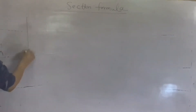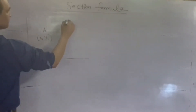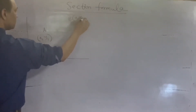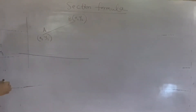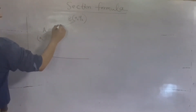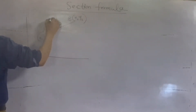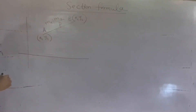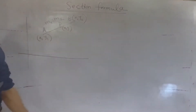Suppose दो points हैं — A(x1, y1) और B(x2, y2)। एक line इनको join करते हैं। एक point है P जो बीच में लाए कर रहा है, जो A और B को divide कर रहा है किसी ratio में। Suppose वो ratio है M1:M2। हमें पता करना है इस point P के coordinates। माल लीजिए वो coordinates हैं X, Y।